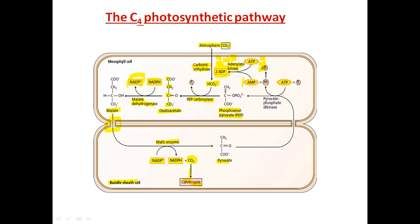Malate, a four-carbon compound, is converted into pyruvate, a three-carbon compound. This pyruvate diffuses back through plasmodesmata to the mesophyll cells, where pyruvate phosphate dikinase enzyme uses ATP energy to regenerate phosphoenol pyruvate, completing and continuing the cycle.